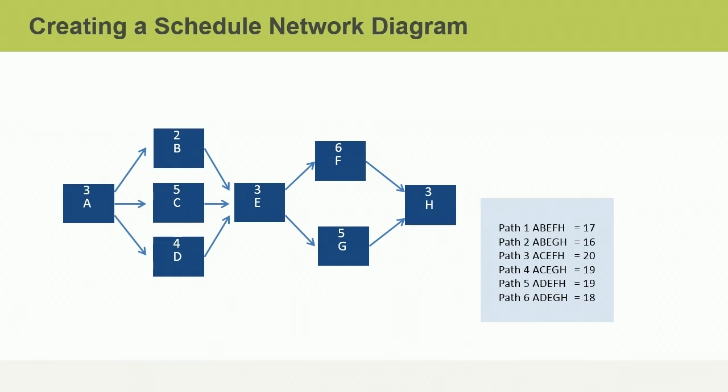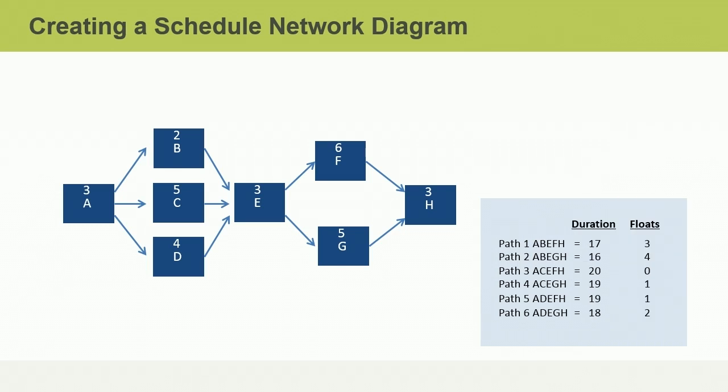There is something else you can determine by comparing the critical path duration to the durations of the other paths. Can you figure out what that is? Feel free to pause the video at any time and resume when you are ready. If you said total float, you are correct. By subtracting the duration of any path from the duration of the critical path, you can determine how much total float is available along that path.